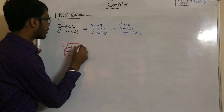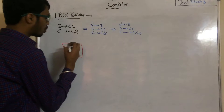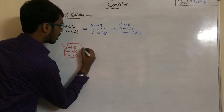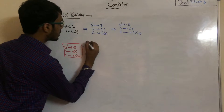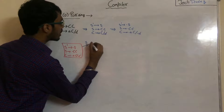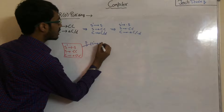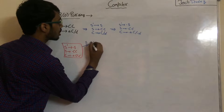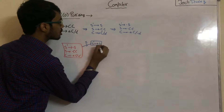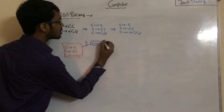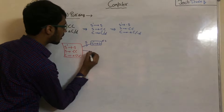After the dot in C to ·AC and C to ·D, we get terminal symbols, so we need not add more productions. Now apply the GOTO move with S — what we get is S' to S·. The dot is at the last position, so this is a reduced state.